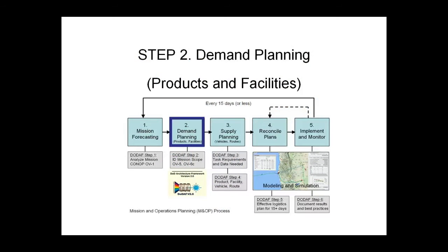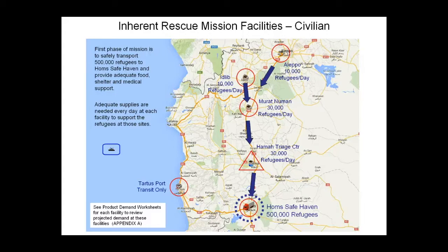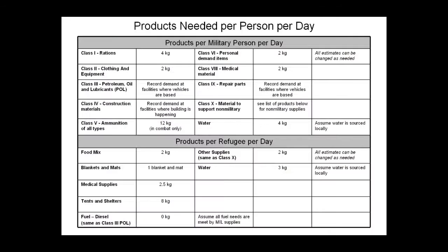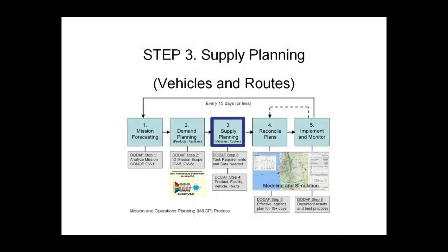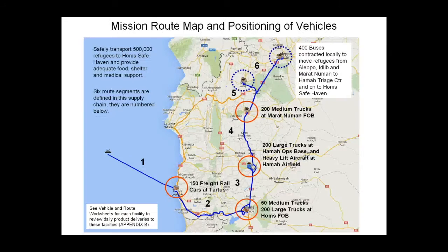In Step 2, mission planners make decisions regarding specific activities needed for the mission. They decide on the personnel involved in those activities and the facilities that will house them. This map shows the civilian facilities and the people and activities they will support. When facilities and related activities and numbers of people are decided upon, forecasts can be made for the amounts of different products needed at each facility each day. Step 3 is where the mission planning team decides on a plan and backup plans for using available vehicles to move products to meet forecasted demand. The route map shows where vehicles will be positioned to move products through the supply chain and move refugees from contested areas to the Homs safe haven.